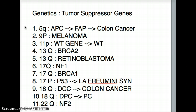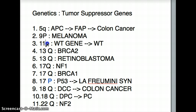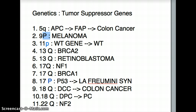So the first one is 5Q. You will see most of them are Q — there are only a couple that are P. So 5 is the first chromosome number, and the first letter in the alphabet is A. So 5Q has a tumor suppressor gene called APC, and APC causes FAP — familial adenomatous polyposis syndrome — which later causes colon cancer.